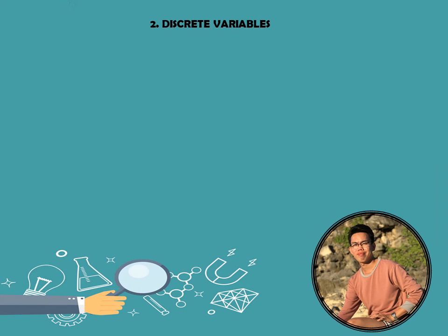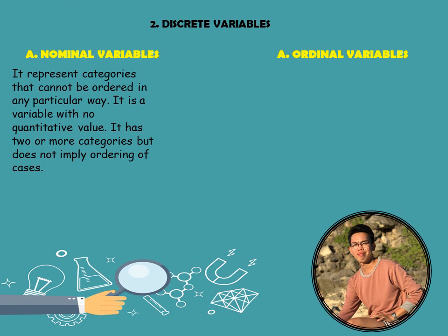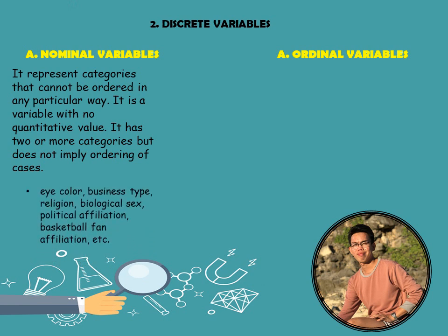Discrete variables can also be categorized into two kinds: nominal variables and ordinal variables. Nominal variables represent categories that cannot be ordered in any particular way. It is a variable with no quantitative value — it has two or more categories but does not imply ordering of cases. You are simply labeling or naming objects, but it doesn't mean one is better than another. For example, eye color — you are just naming green or blue. Or business type. These variables are often used in qualitative research design.